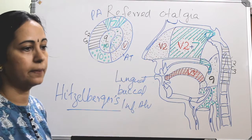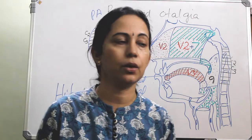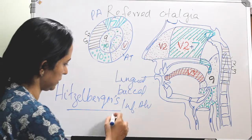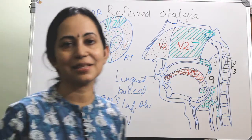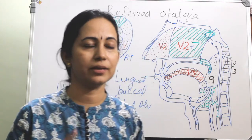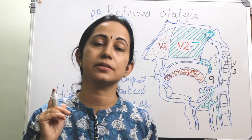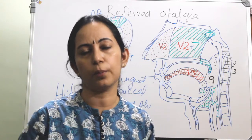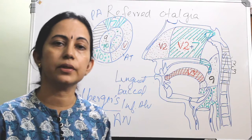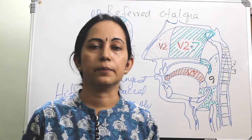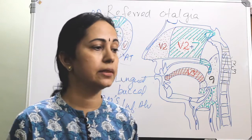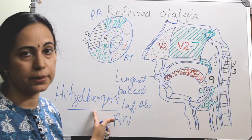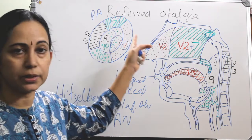Don't forget — the Hitzelberger sign is usually asked in examinations and is a very commonly asked MCQ. Hyposthesia of the posterior superior part of the external auditory canal, seen in acoustic neuroma, is called the Hitzelberger sign. That is about the seventh nerve.